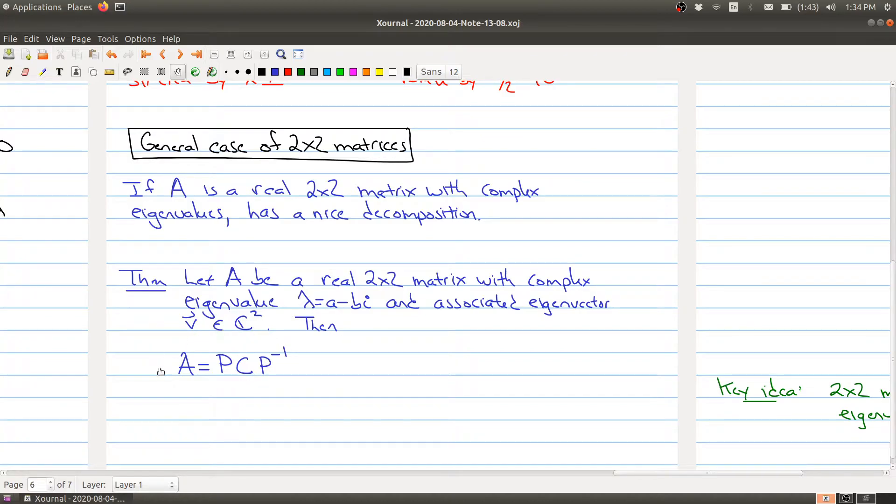You can factor your matrix A as P times C times P inverse, where P equals the real part of V and then the imaginary part of V. You're taking V and in the first column you put the real part of V, in the second part the imaginary part of V. And C equals a minus b, b, a, where the a and b are coming from the complex eigenvalue.